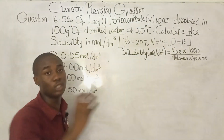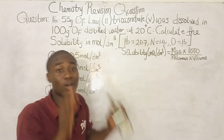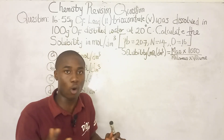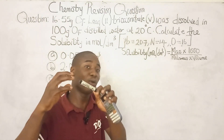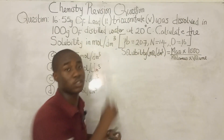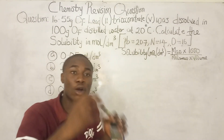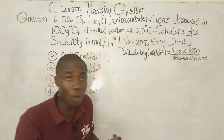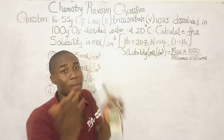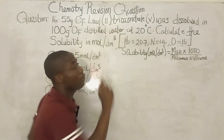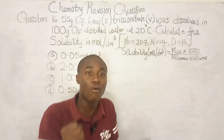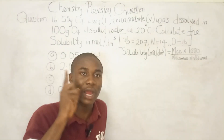First we have to identify the compound. The compound was written in words — they did not give us the chemical formula. Without the correct chemical formula, solving this question is not going to be possible and we might not get the correct answer. So I'll show you how to get the chemical formula of lead(II) trioxonitrate(V).